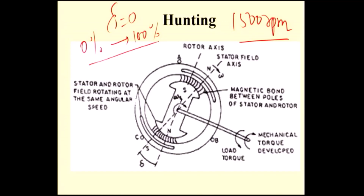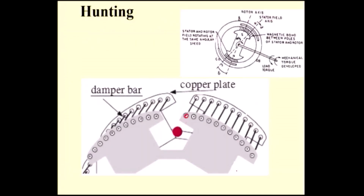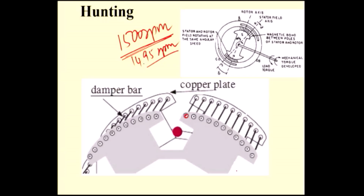At that case, what will happen? There is a damper winding. Whenever a conductor cuts the magnetic flux, EMF will be induced. The rotating magnetic field runs at constant speed — 1500 RPM. Because of the increase in load, the rotor speed slightly decreases, say to 1495 RPM. So there is a small speed difference between the rotating magnetic field and the rotor. Because of this speed difference, EMF will be induced in the damper winding. The damper winding is nothing but squirrel cage winding, placed in the pole face of the rotor.